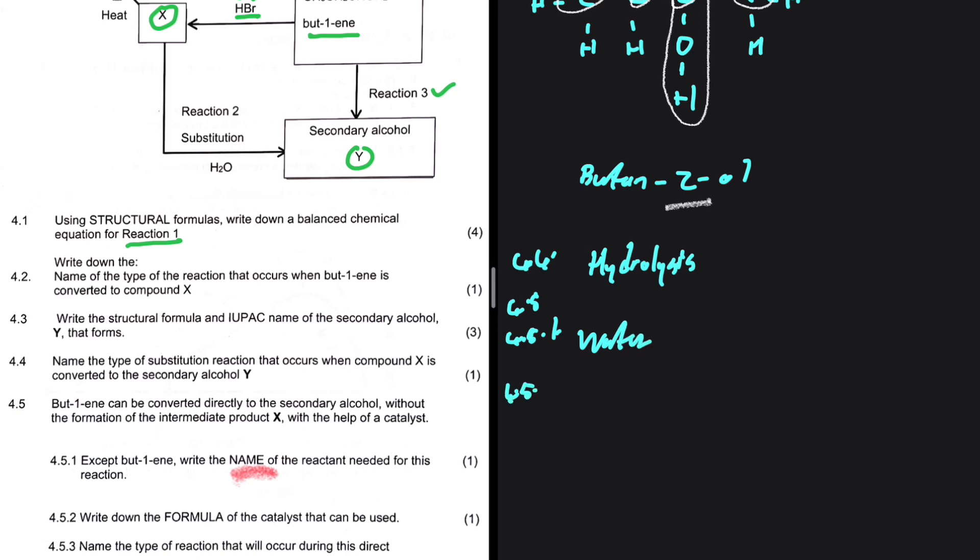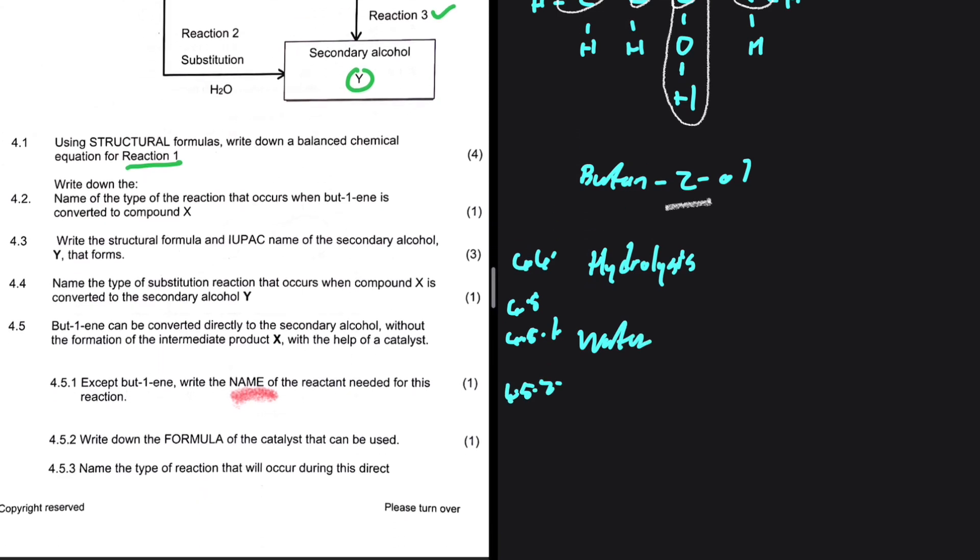And 4.5.2, write down the formula of the catalyst that can be used. If you write sulfuric acid, your answer is wrong. The question says formula. So you're supposed to write H2SO4.